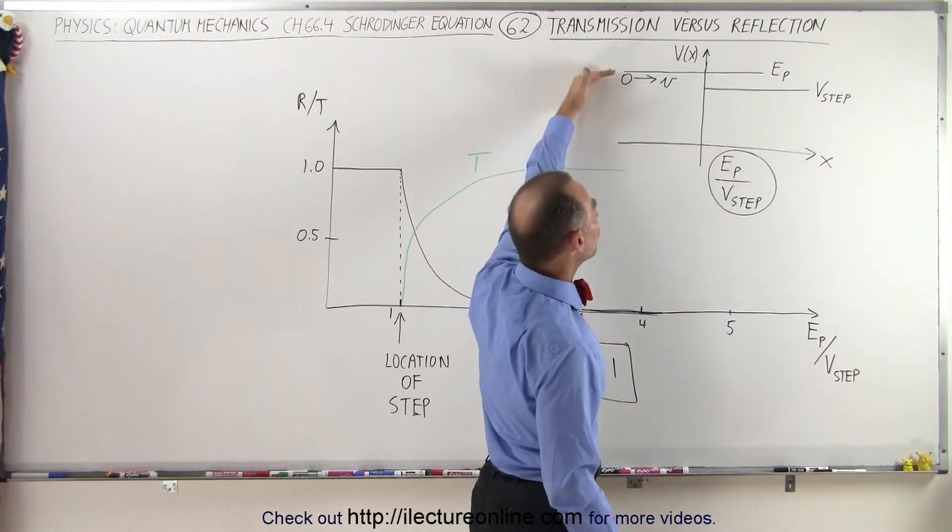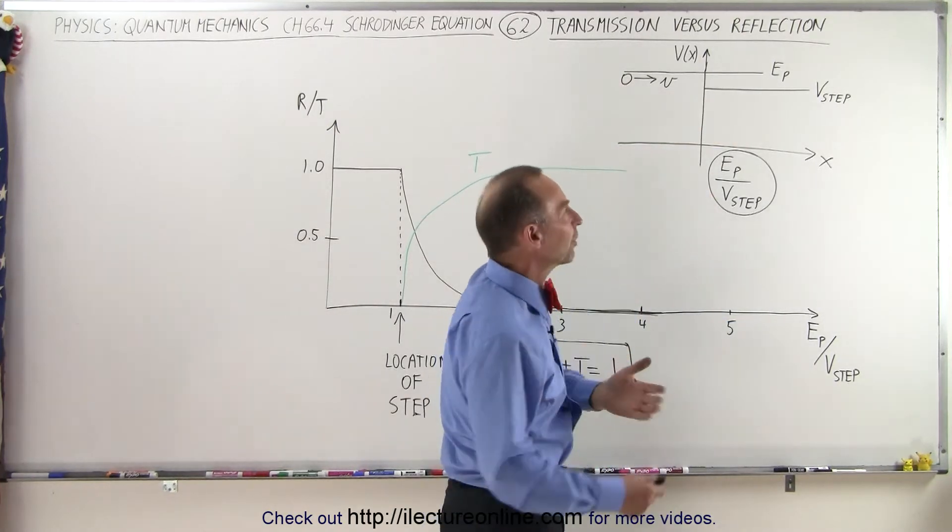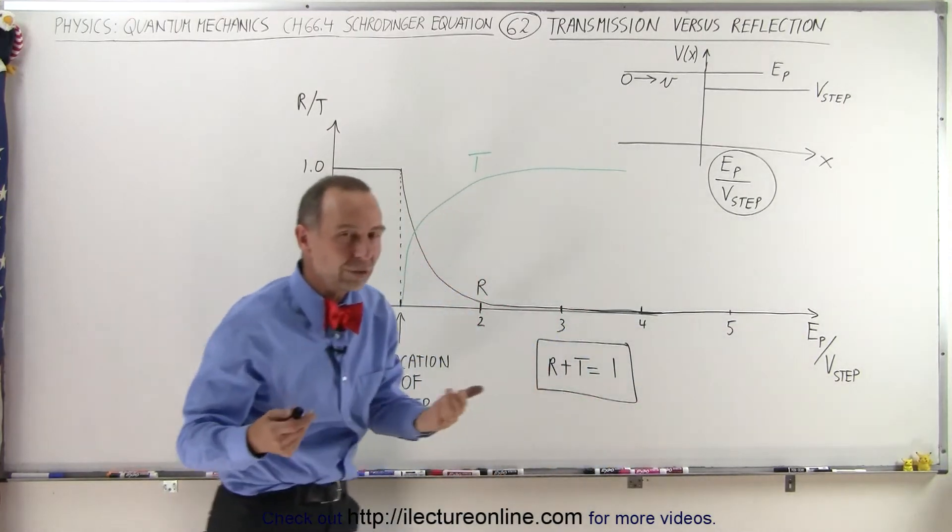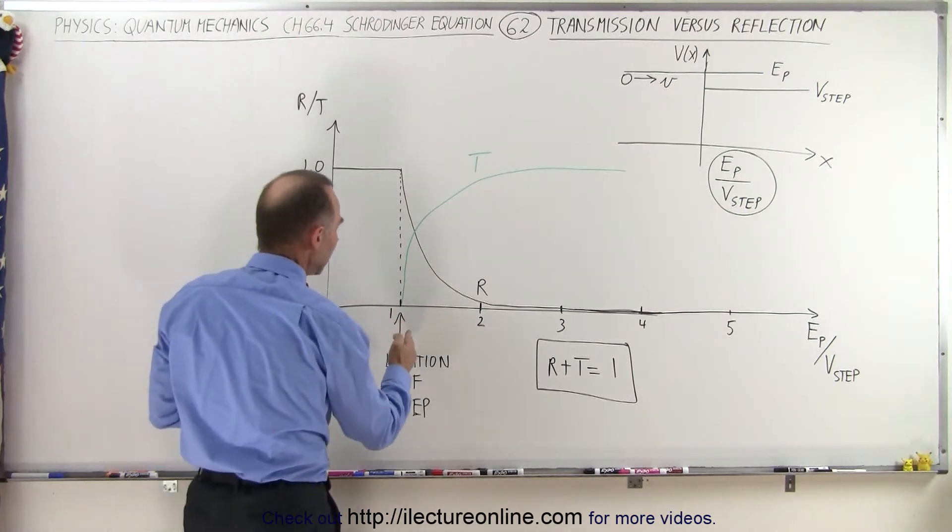And if the energy of the particle is less than the energy of the barrier, we would expect 100% of the particle to stop and get reflected back. Well, in the quantum world, that's not the case. As we can see, normally we would expect...